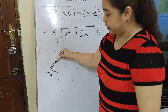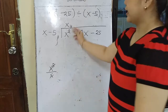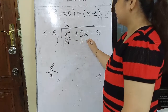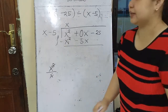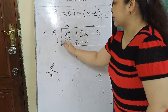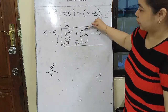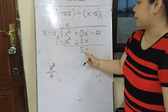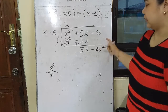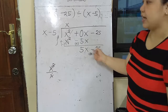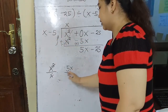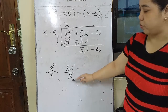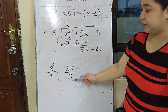Then subtract — change the signs of the subtrahend and proceed to addition. x² is cancelled. Positive 0x plus positive 5x gives positive 5x. Bring down the last term, giving 5x minus 25. Divide 5x by x — the x cancels and we're left with 5. The sign is positive, so positive 5.